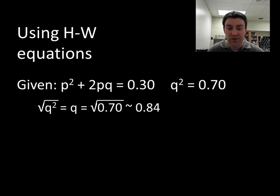So if I square root 0.70, make sure you put that in your calculator and you see that it's actually a larger number, 0.84. That tells me that 84 percent of all of the alleles in the gene pool are recessive.